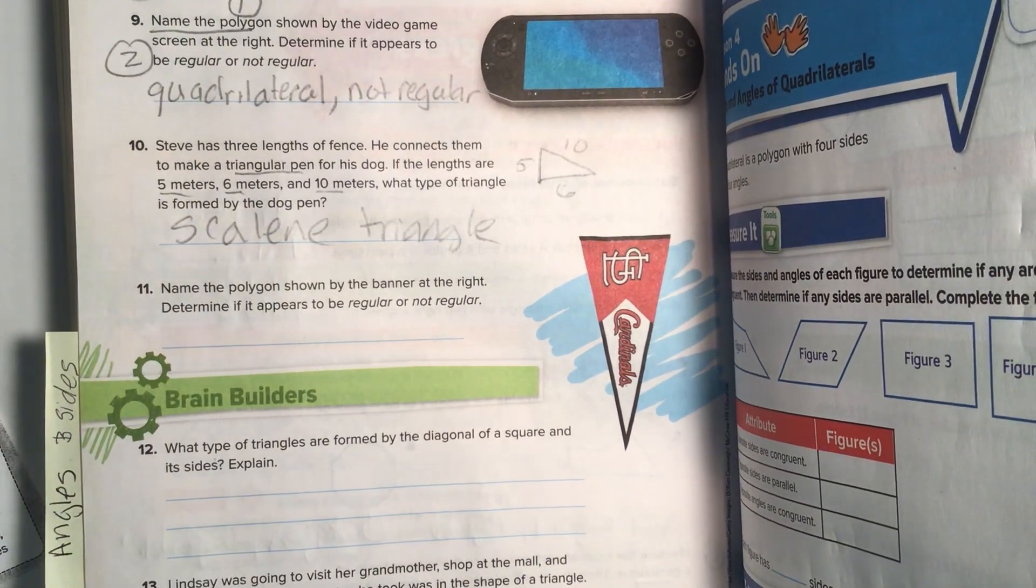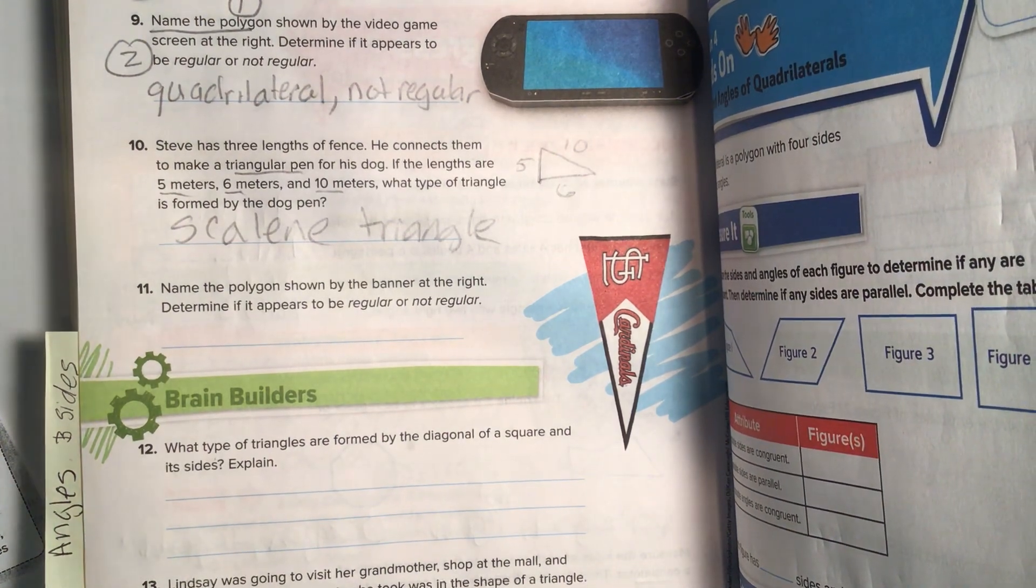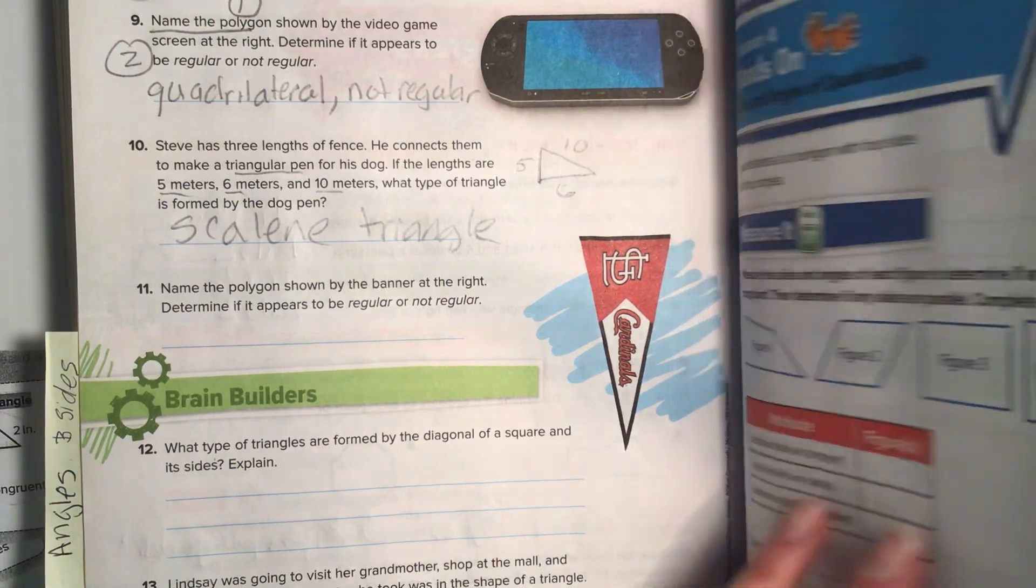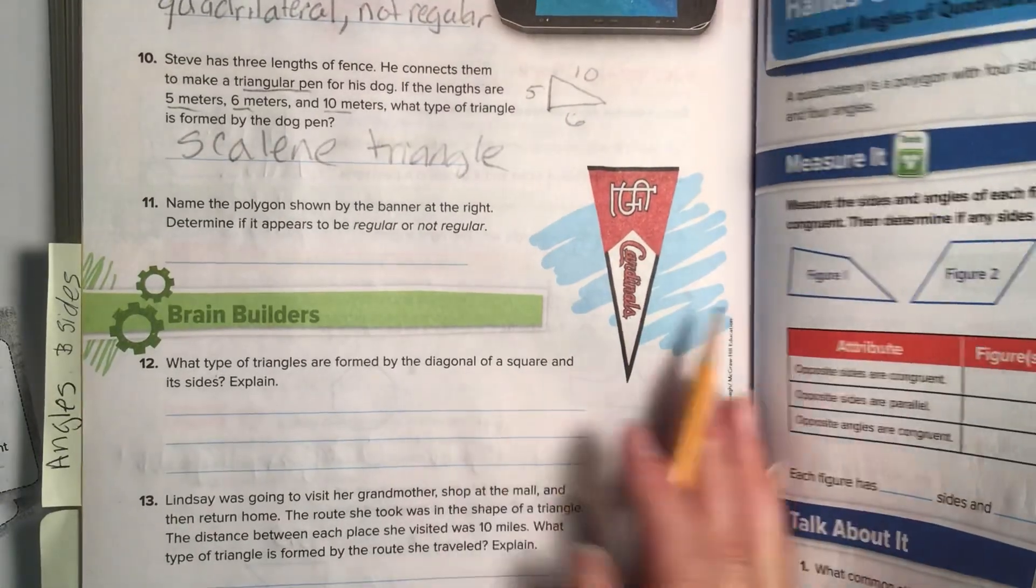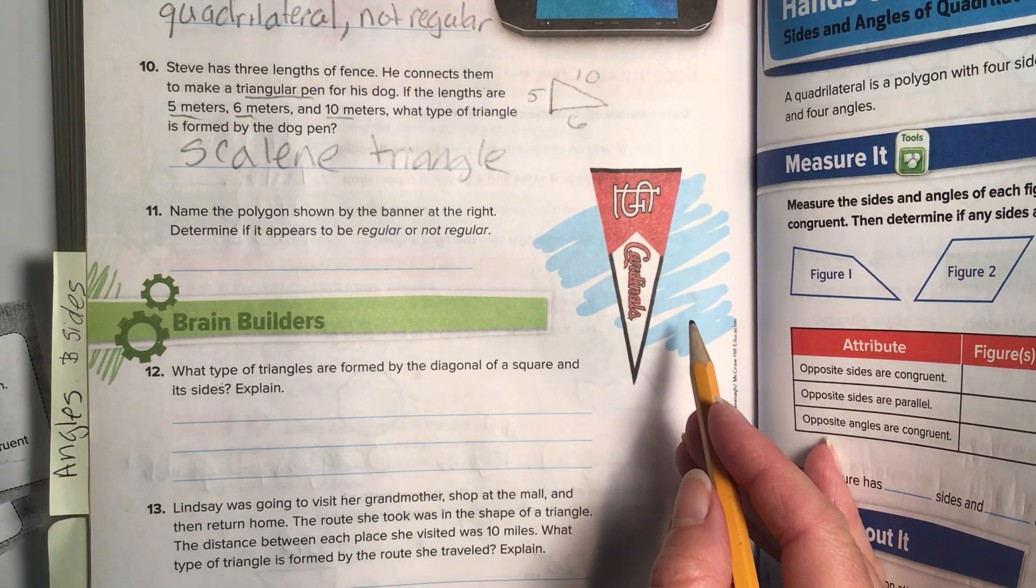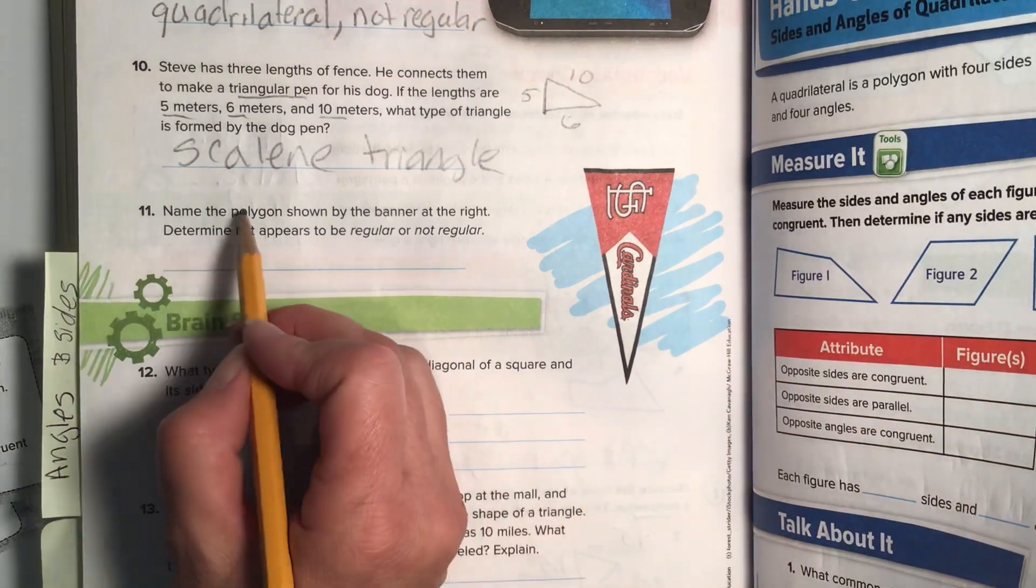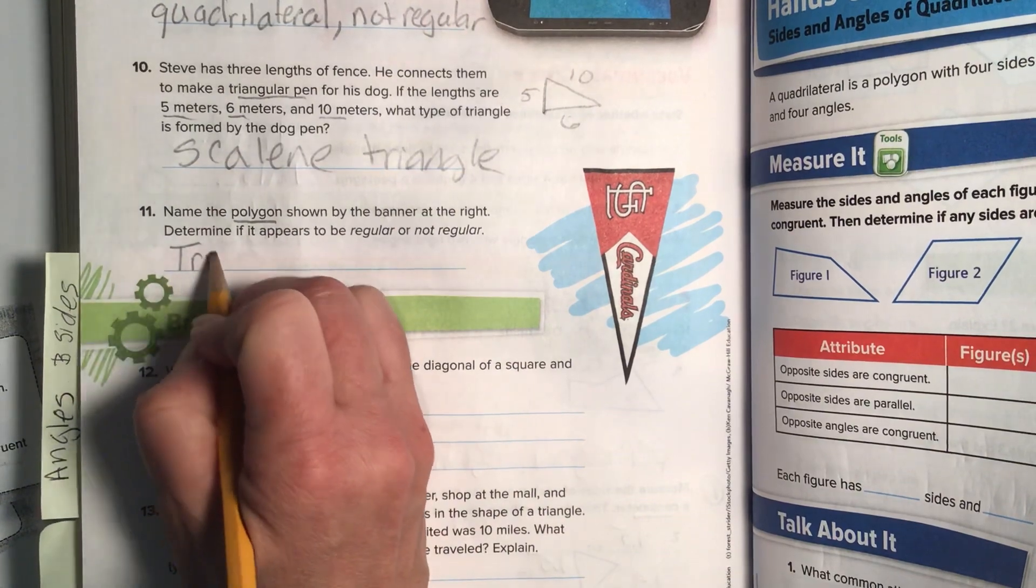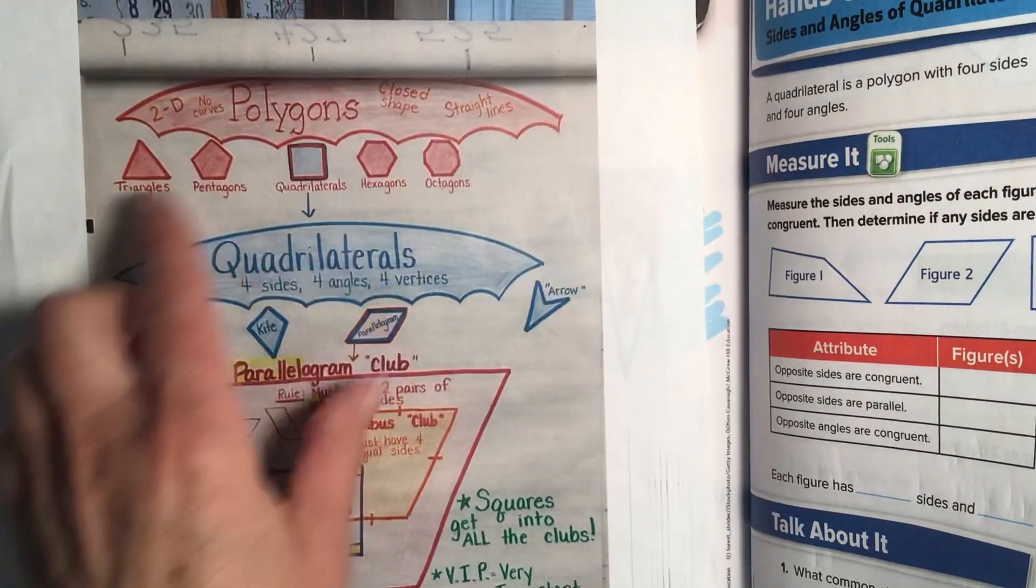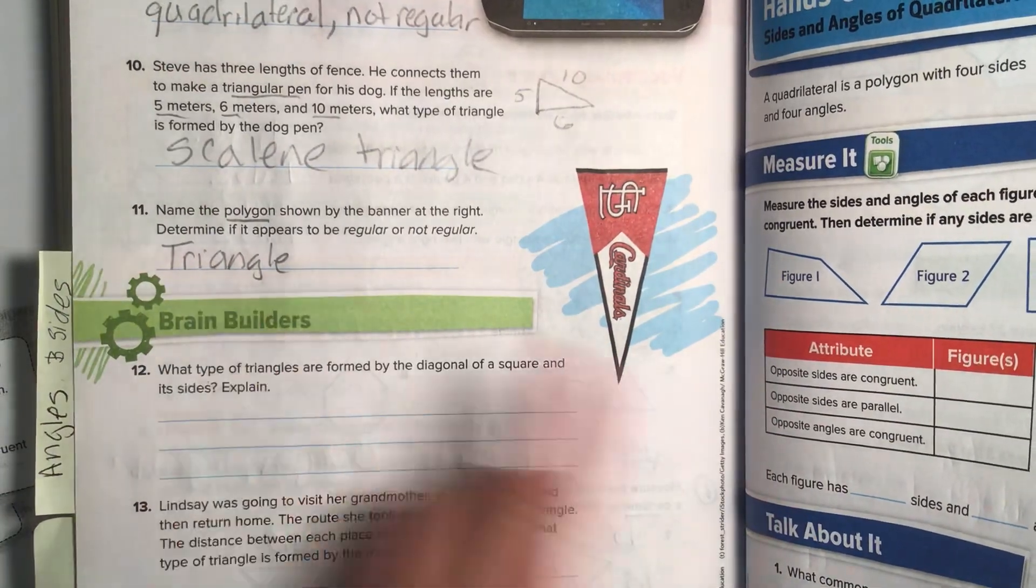Alright, number eleven. Name the polygon shown by the banner of the right. Determine if it appears to be regular or not regular. Okay, let's look at it. We are going to name the triangle of the right. Alright, this triangle has two long sides and one short side. But it also... Oh, it wants us to name it a polygon. So, it wants us to do this. Because out of all of these shapes, right here, it has three sides. So, this banner has three sides. So, it is considered a triangle.